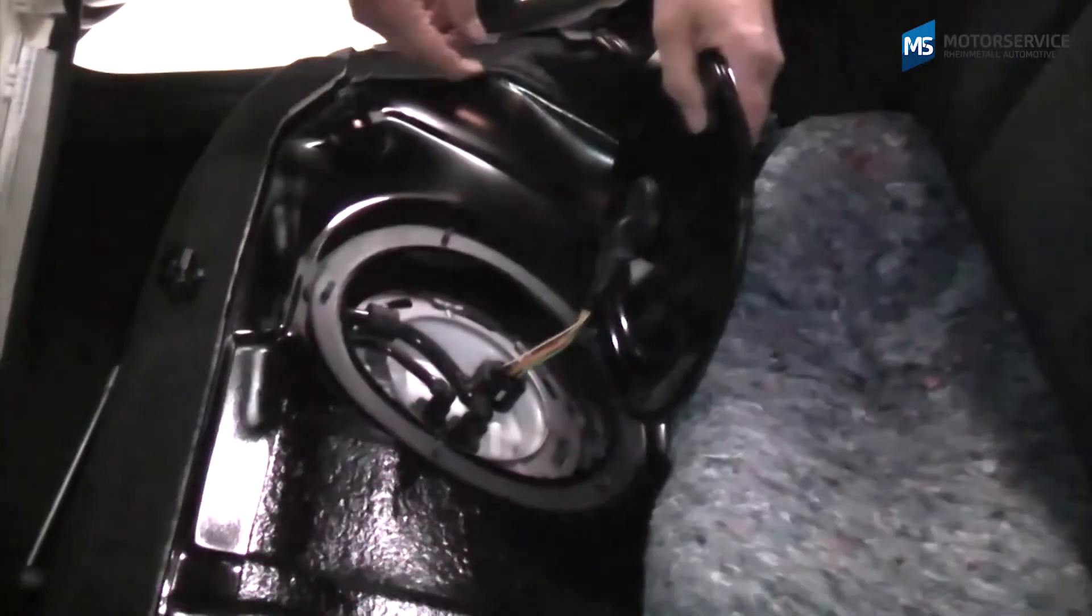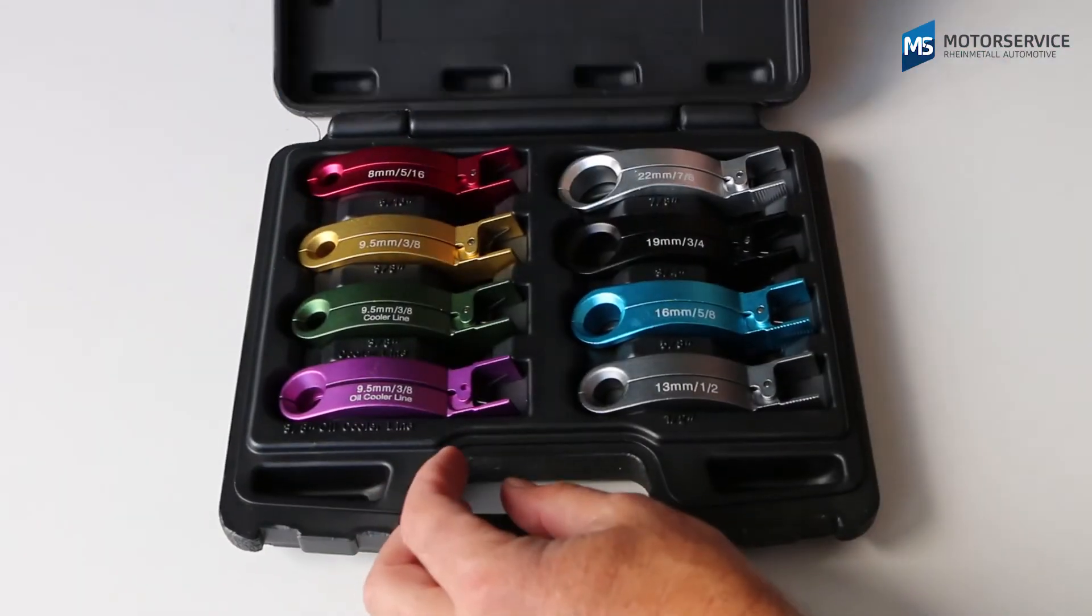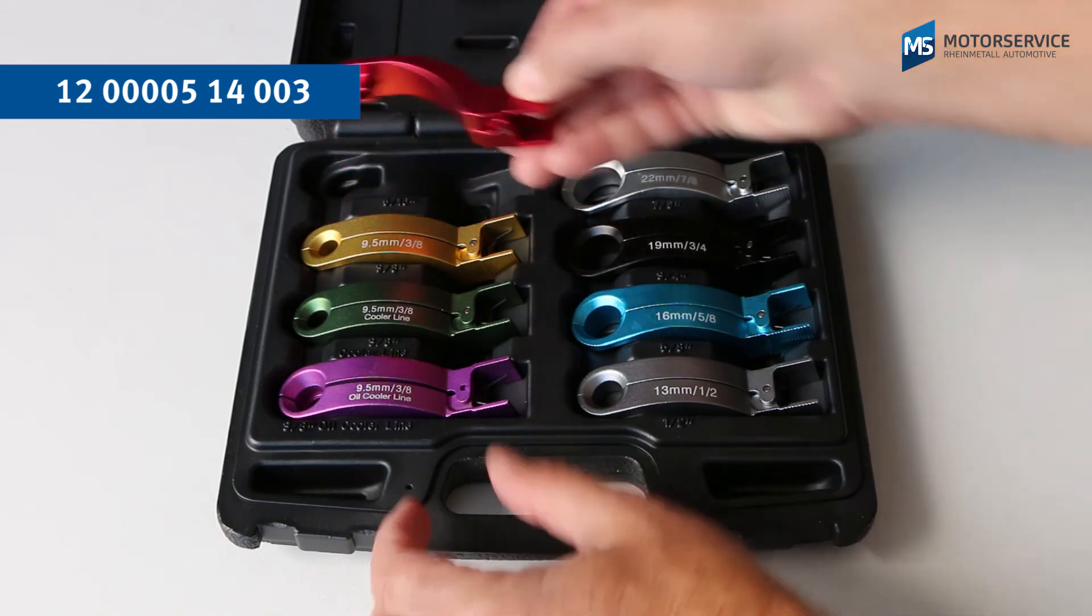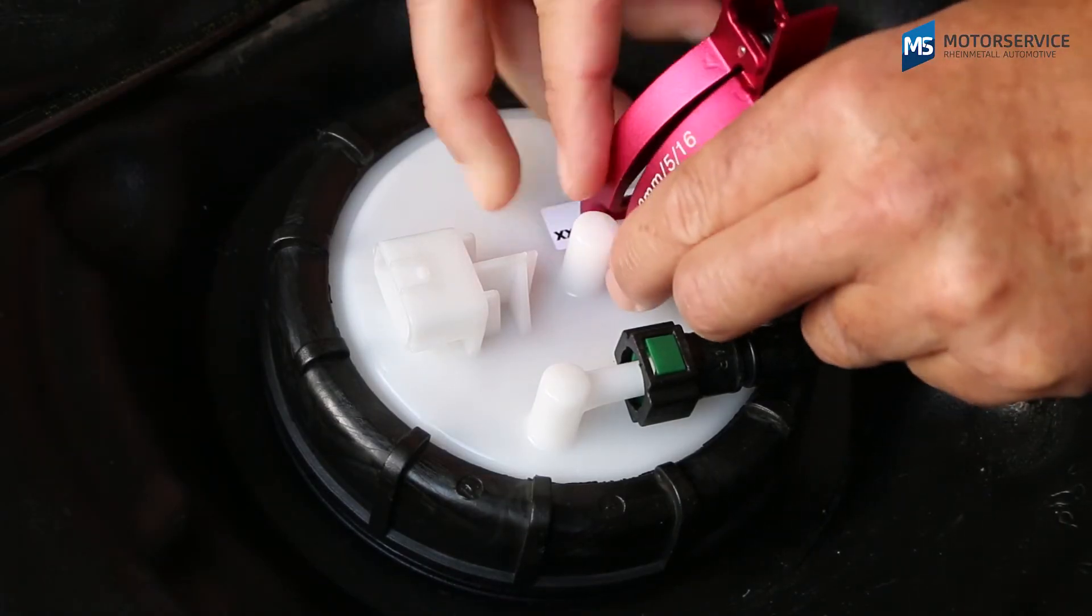Many vehicle manufacturers now use the so-called quick couplers, known as quick connectors, on the fuel lines. For unlocking these quick connectors, Motor Service offers a useful set with eight tools for the common sizes.